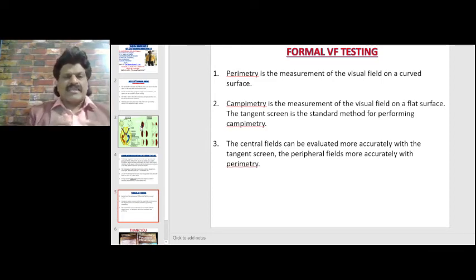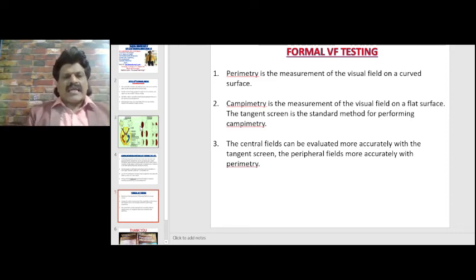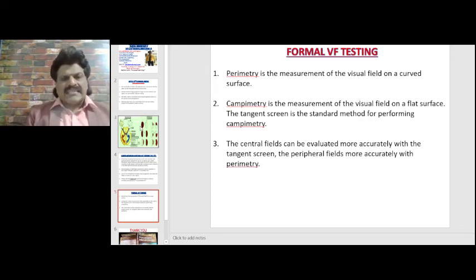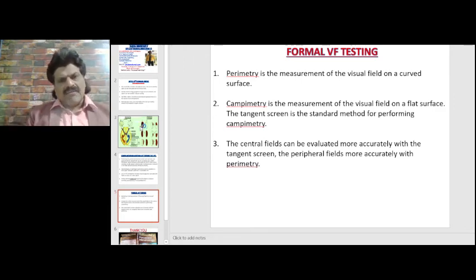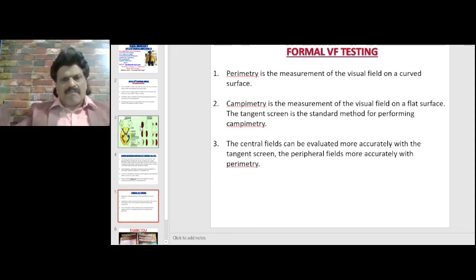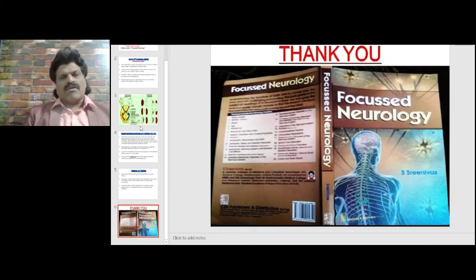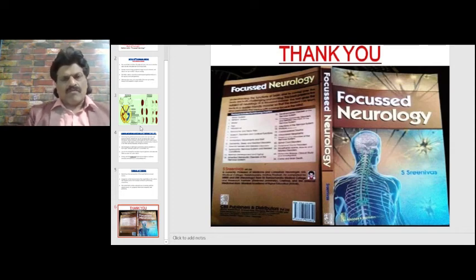For formal visual field testing: perimetry is the measurement of the visual field on a curved surface, while campimetry is the measurement on a flat surface. The tangent screen is the standard method for performing campimetry. Central fields can be evaluated more accurately with the tangent screen, and peripheral fields more accurately with perimetry.